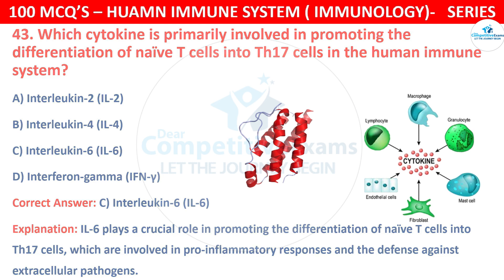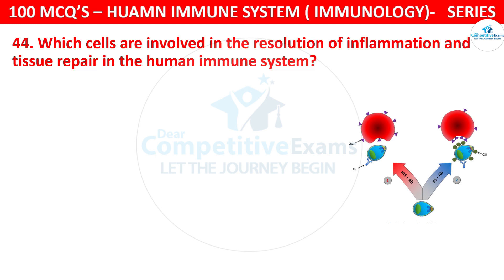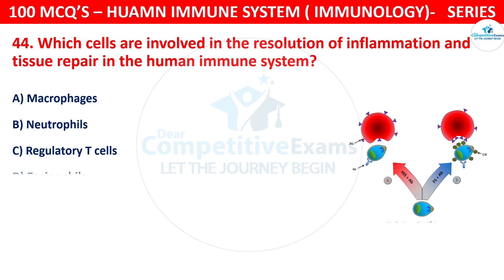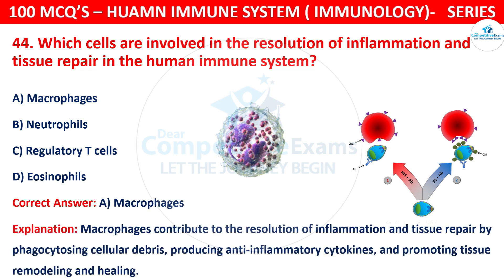Question number 44. Which cells are involved in the resolution of inflammation and tissue repair in the human immune system? The options are macrophages, neutrophils, regulatory T cells, or eosinophils. The correct answer is A, that is macrophages. Macrophages contribute to the resolution of inflammation and tissue repair by phagocytosing cellular debris, producing anti-inflammatory cytokines, and promoting tissue remodeling and healing.